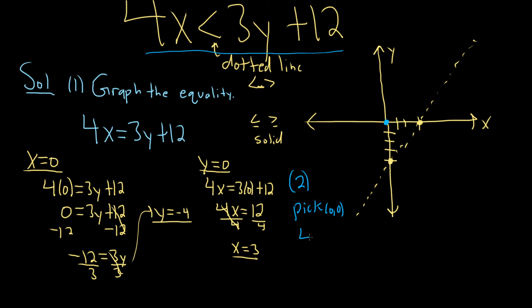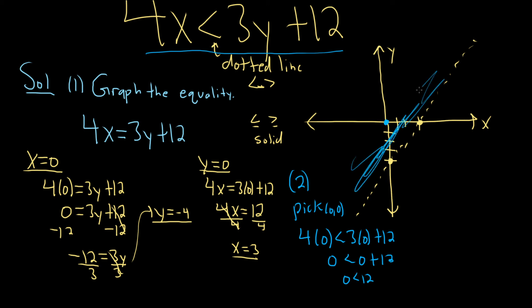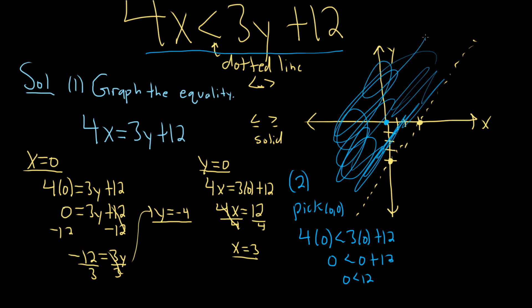So let's check: 4 times 0 is less than 3 times 0 plus 12, which gives 0 is less than 12. That's true! So we're going to shade up here — this is the shaded region we want. If it had been false, we would shade the other side. I hope this video has been helpful. Thank you.